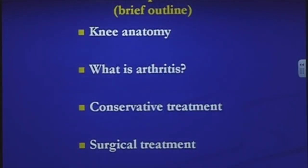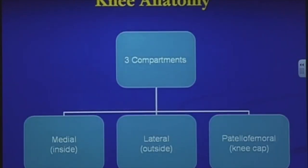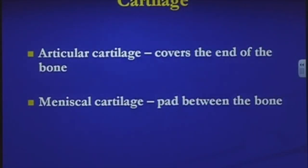In knee anatomy, the knee consists of three compartments: the medial compartment or inside of the knee, the lateral compartment or outside of the knee, and the kneecap — the third compartment — called the patellofemoral joint. When we talk about partial knee replacements, we talk about replacing just one compartment. A total knee replacement involves replacing the entire knee — all three compartments. There are two types of cartilage in the knee: articular cartilage, which covers the end of the bone, and meniscal cartilage, a pad between the bones.